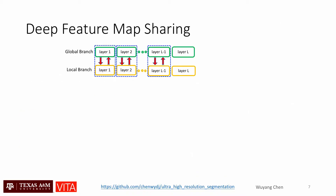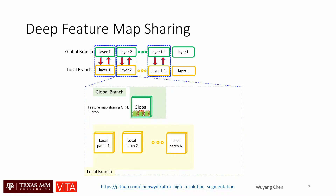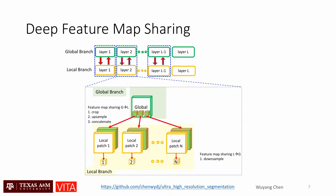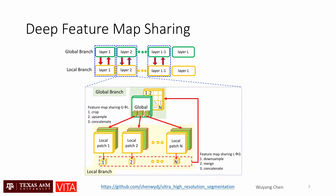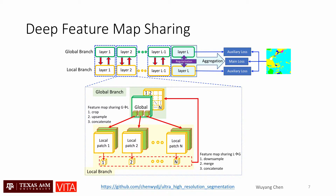We enable deep feature map sharing in each layer. Feature maps from the global branch are first cropped and upsampled to match the size of the local feature maps, and concatenated to the local branch. Symmetrically, the local feature maps are first downsampled to match the same relative spatial ratio as patches were cropped, then merged in the same order as cropped and concatenated to the global branch. A weakly coupled regularization is added to avoid the local branch from learning too much faster than the global one. We also apply two auxiliary losses to enforce the output from both branches to be close to their ground truth.